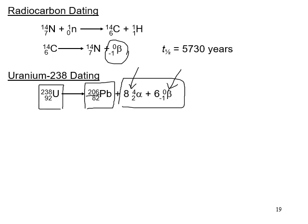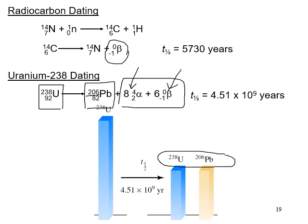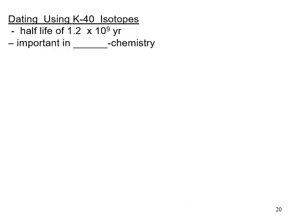An assumption is made about how much lead and uranium was originally in the sample. By looking at the current ratio, you can estimate its age. If you assume it started as all uranium-238, the ratio between uranium and lead tells you how old it is. Potassium-40 is also used to date geological substances — it decays to argon-40 — which is important in geochemistry.